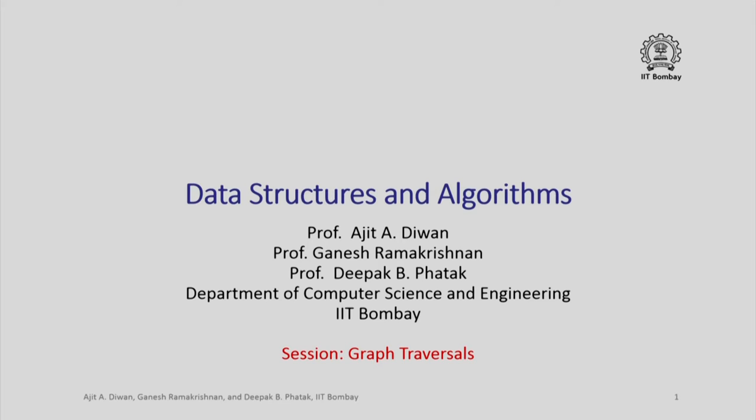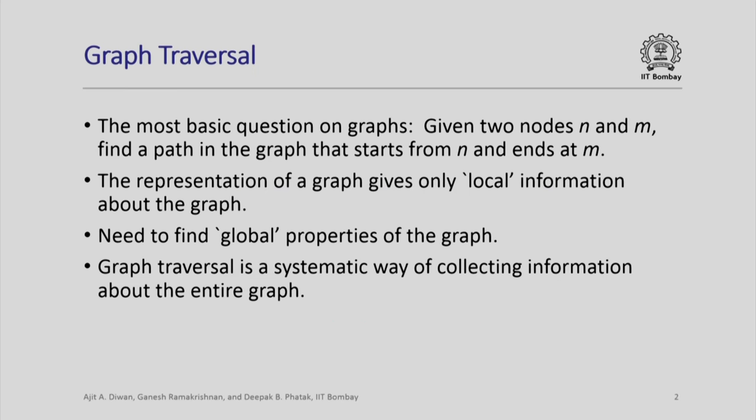Hello and welcome to this session in which we look at some simple algorithms on graphs. In particular we look at what are called graph traversals. The most basic question on graphs is: given two nodes n and m, find a path in the graph that starts from n and ends at m. That is, we want to start at node n, move to some successor of n, and keep moving to successors until we reach node m.